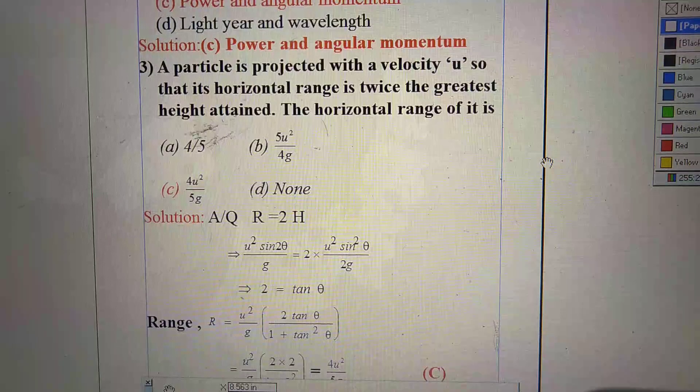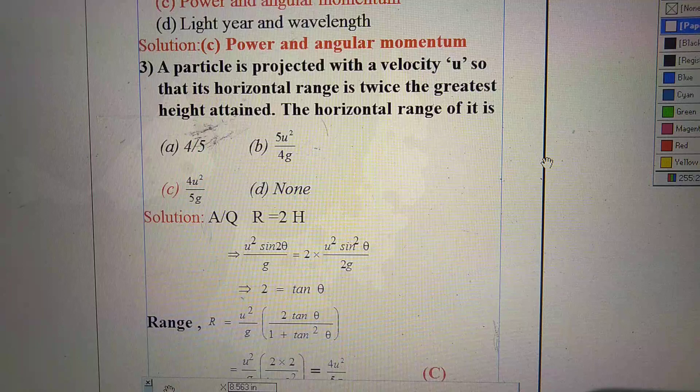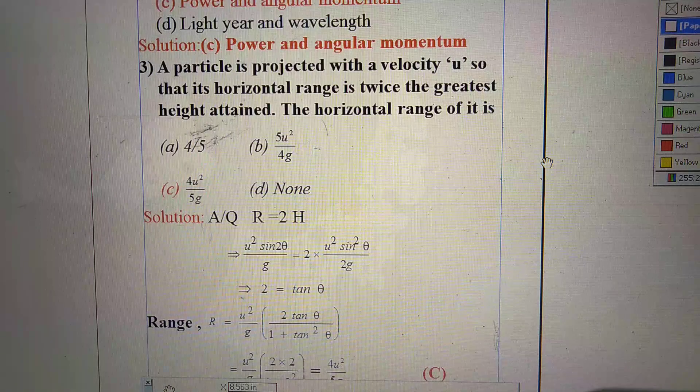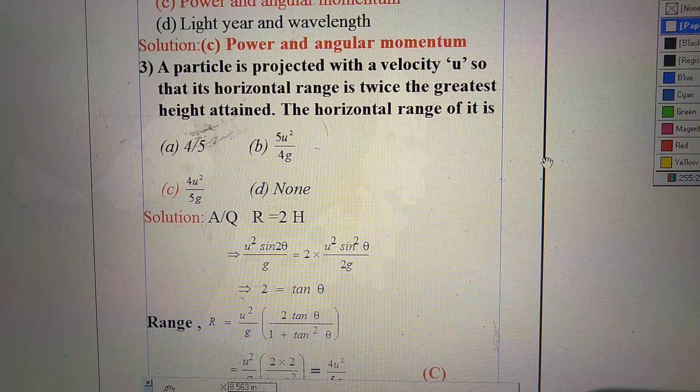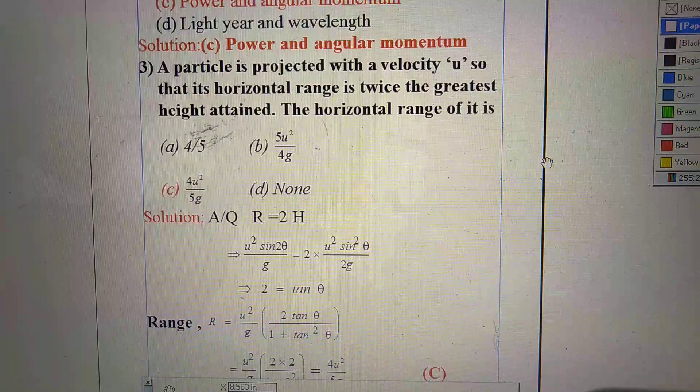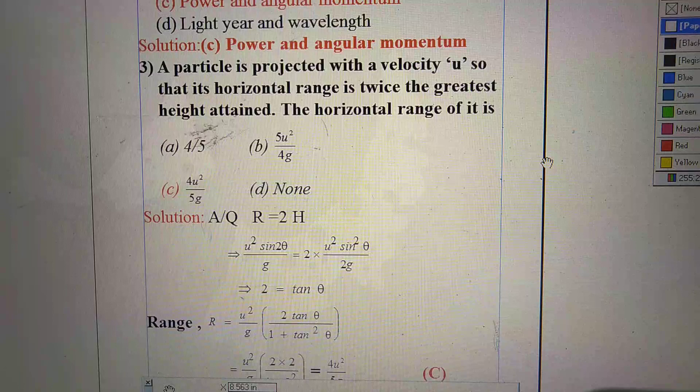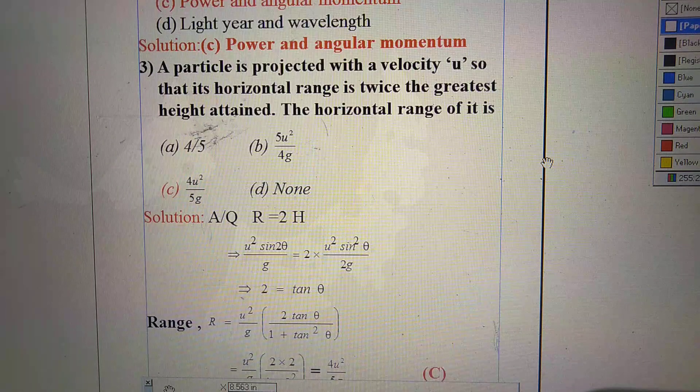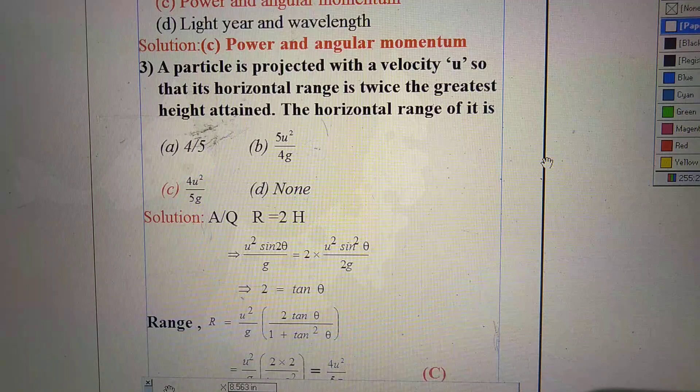So third question. A particle is projected with a velocity u so that its horizontal range is twice the greatest height attained, and the horizontal range of it is... Here we have to find out the horizontal range. There are four options. Number A: 4 by 5. Number B: 5u squared by 4g. Number C: 4u squared by 5g. D: none. So how can you solve this one?